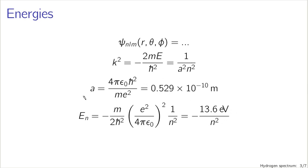The energies we got, after re-unwinding all of those definitions, give us the energy of the nth stationary state as a constant times 1/n². That constant should look familiar: it's −13.6 electron volts, with a minus sign signifying that these are bound states — their energy is less than that of a free particle. So minus 13.6 eV over n² are the energy levels of our stationary states.